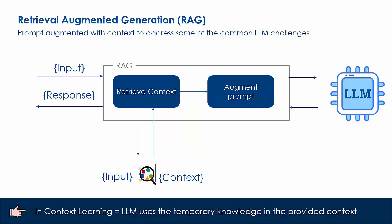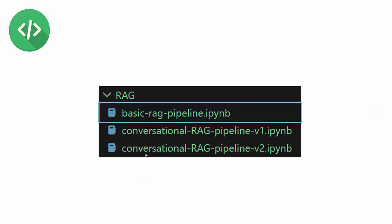The LLM then uses the context to generate a response. This entire mechanism is built on the ability of LLMs to acquire knowledge from the prompt itself. Recall that this ability of the LLM to learn from the context within the prompt is referred to as in-context learning. This knowledge acquired by the LLM is temporary in nature — in other words, it does not change the state of the parametric knowledge in the LLM.